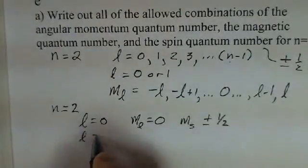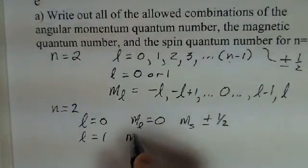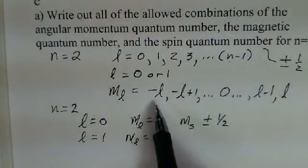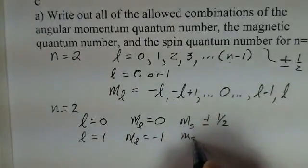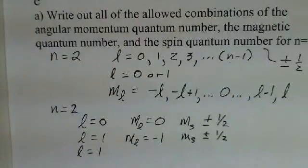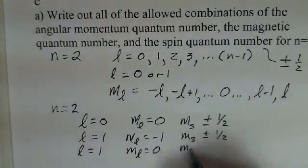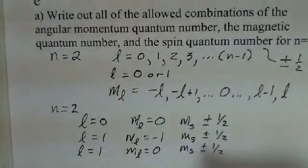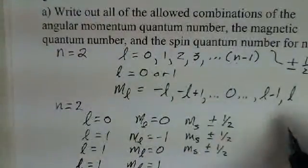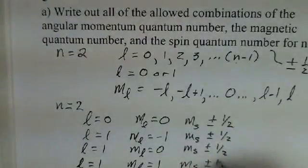Our next possibility, still in this n equal 2 case, is L equal to 1. And in one of those situations, the m sub l can be minus 1. We can start the list at minus l. m sub s still either plus a half or minus a half. Another l equal 1 would be m sub l equals 0, and m sub s again plus or minus one half. And then l equal 1, m sub l plus 1 is where we have to stop this list of m sub l numbers. But again, m sub s plus or minus one half.